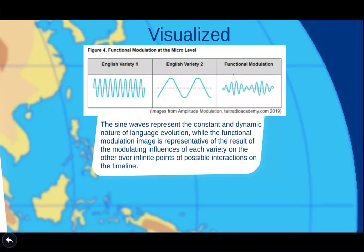Functional modulation visualized takes two different varieties of English. The sine waves represent the constant and dynamic nature of language evolution, while the functional modulation image is representative of the result of the modulating influences of each variety on the other over infinite points of possible interaction on a timeline. You take English variety one and two, combine them together to create a timeline in which there is an infinite number of possible interactions, represented by the two varieties coming together and modulating each other.